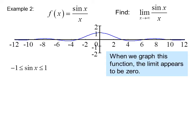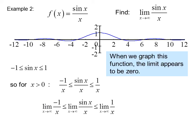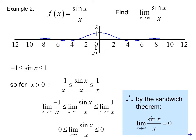We know that sin x is between negative 1 and positive 1. So for x greater than 0, negative 1 over x is less than or equal to sin x over x, which is less than or equal to 1 over x. Taking the limit as x goes to infinity of all three terms, we get 0 is less than or equal to the limit as x goes to infinity of sin x over x, which is less than or equal to 0. Therefore, by the Sandwich Theorem, the limit as x goes to infinity of sin x over x equals 0.